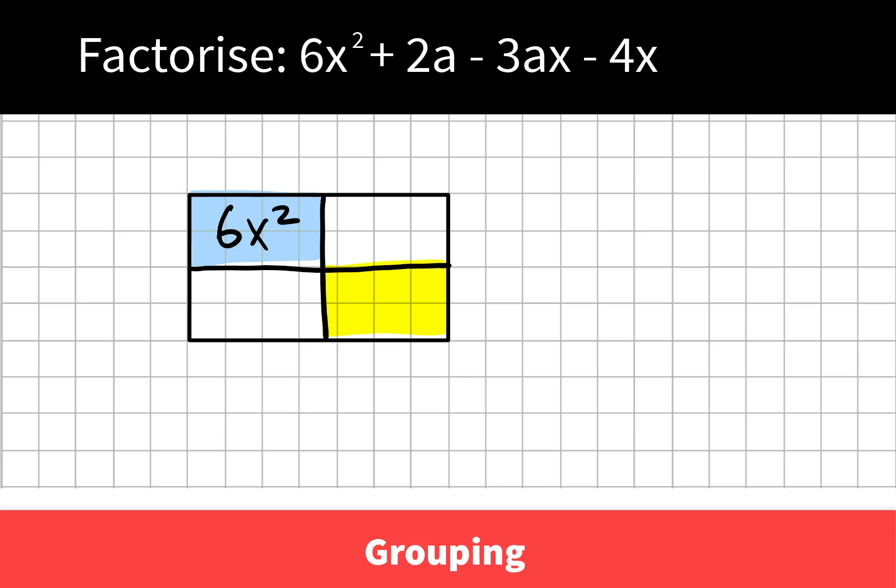It has no letter in common with 6x squared, where the 3ax and the 4x do. So I'm going to put the 2a in the opposite diagonal.